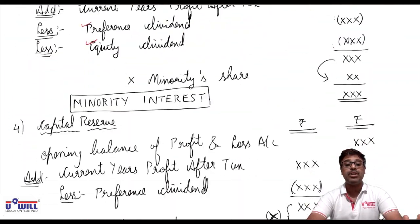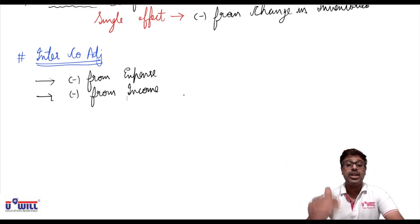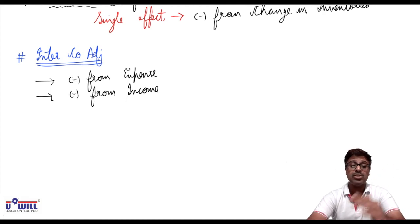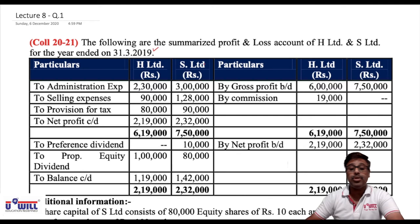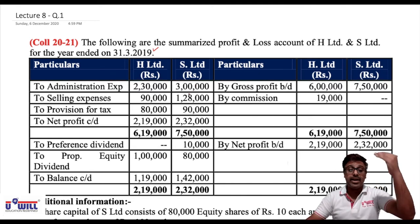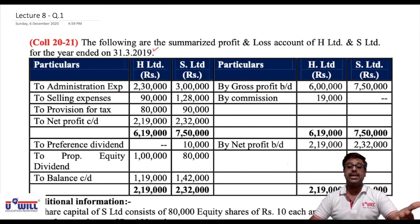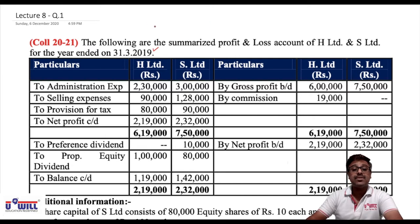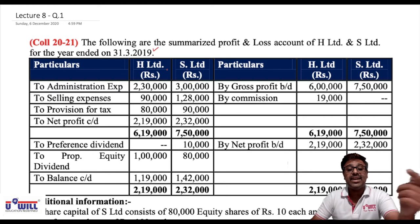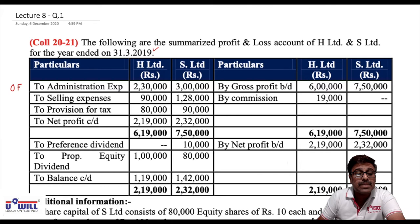Now we solve Question 1. The following are the summarized profit and loss accounts of H Limited and S Limited for the year ended 31/3/2019. They are given in debit-credit horizontal format, but we must make the solution in vertical format. Let us mark which items go under which heading: administrative expenses go in other expenses, selling expenses also in other expenses, provision for tax comes at the end.